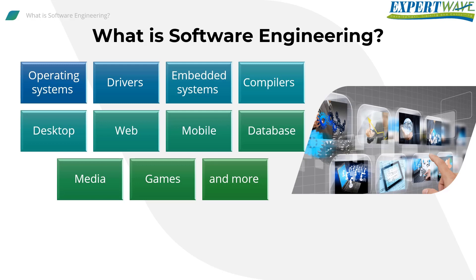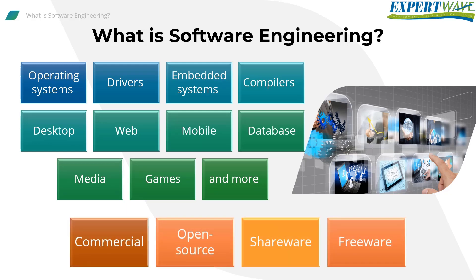There are many ways to categorize software: operating systems, drivers, embedded systems, compilers, applications like desktop, web, mobile, database, media, games, and more. All these can be classified under commercial, open source, shareware software, and freeware. Each type of software has its constraints, user base, and size.